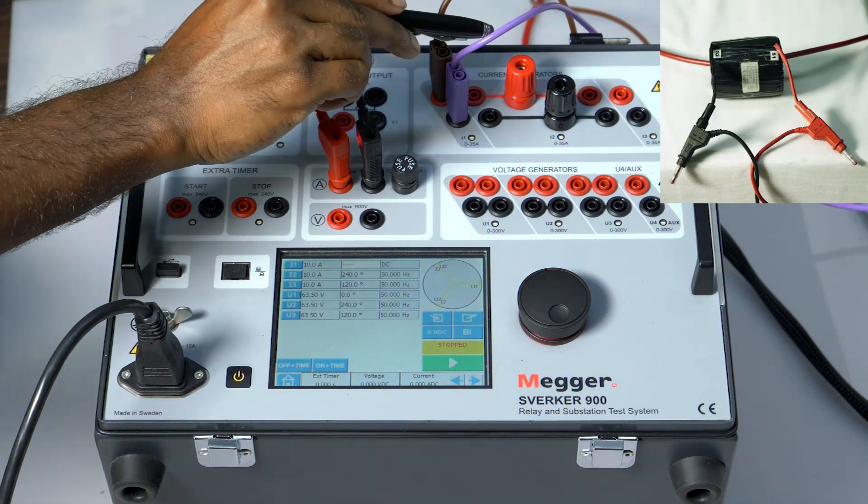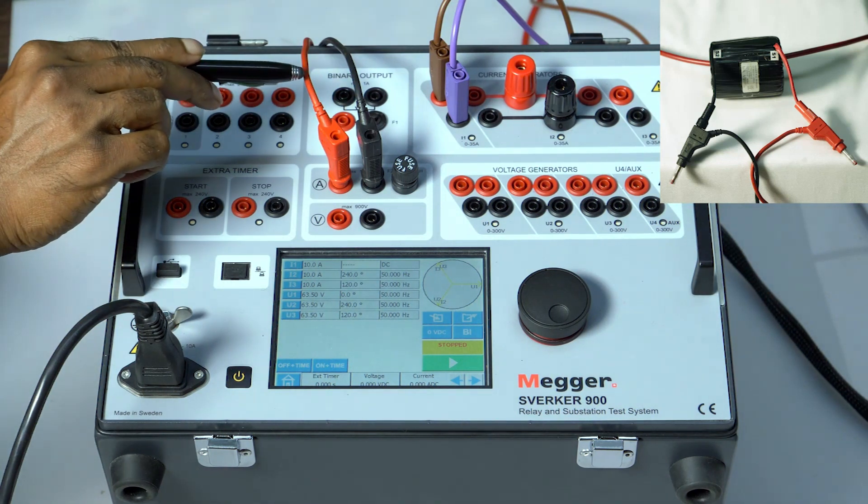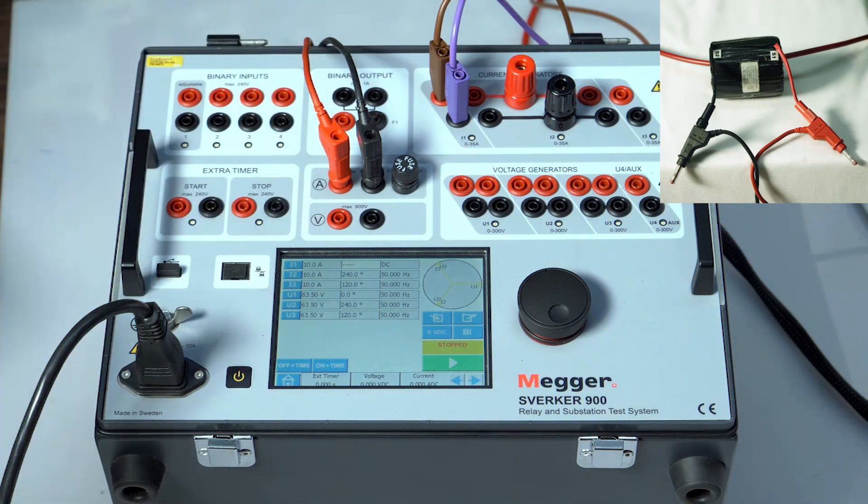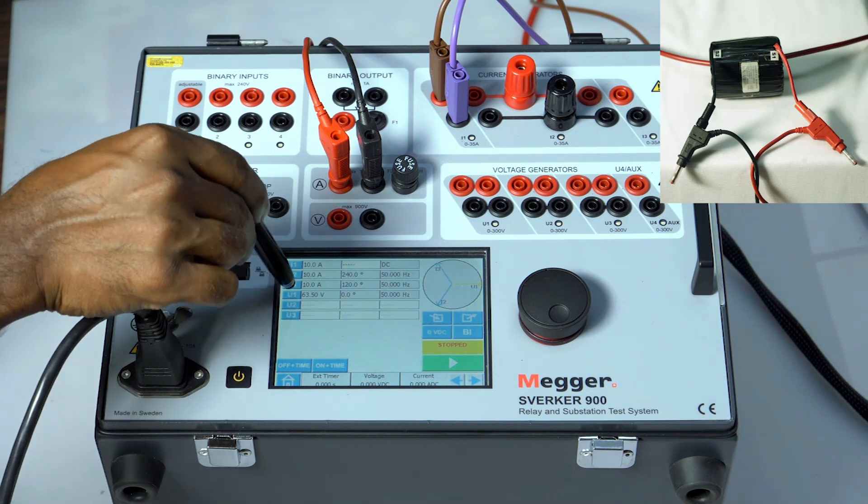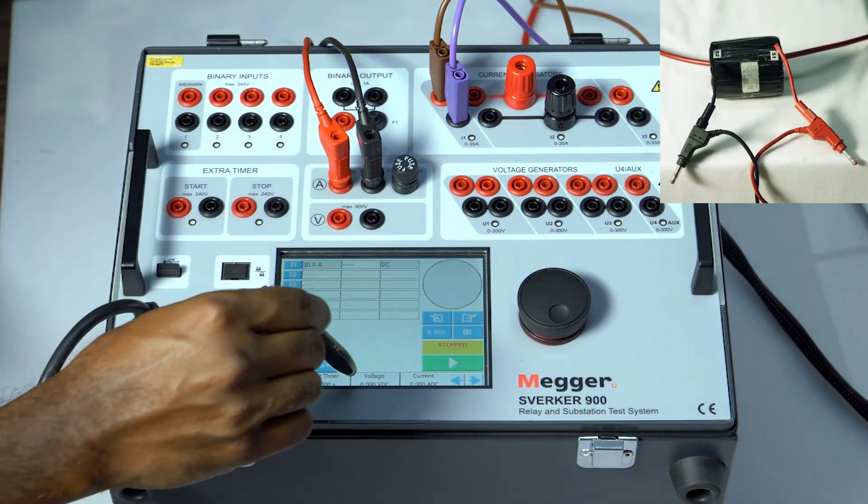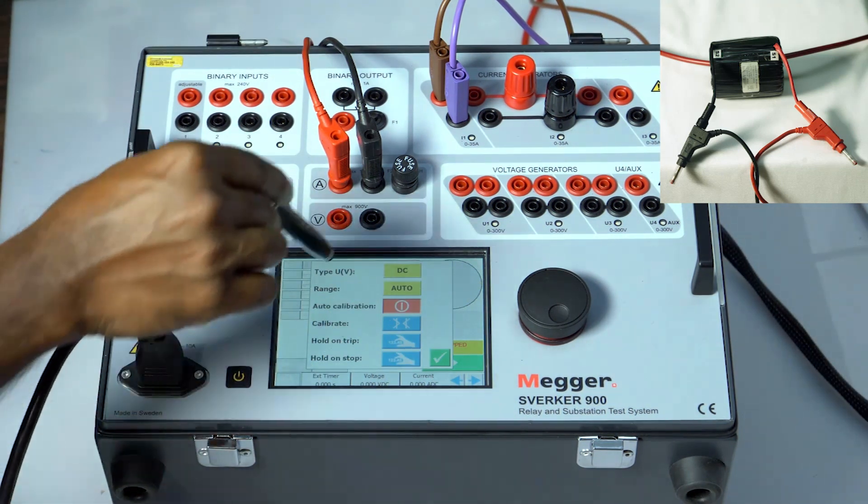The CT secondary is connected to the ammeter. The source which is not used is disabled. The voltmeter has to be selected as DC and hold on stop has to be enabled, similarly for the current.